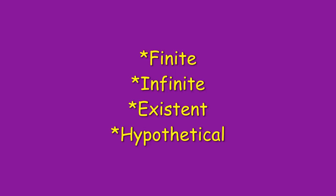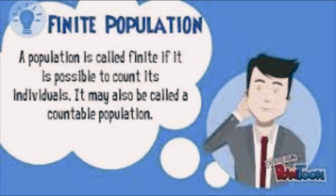A finite population is one that has a beginning and an end — it is countable. A population is called finite if it is possible to count its individual elements. For example, the population of students in Math 205 is finite. In contrast, the population of pebbles or stone types would be infinite because they cannot be counted. When a population is infinite, we say it is not countable.